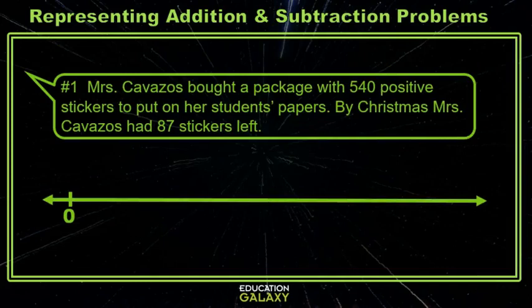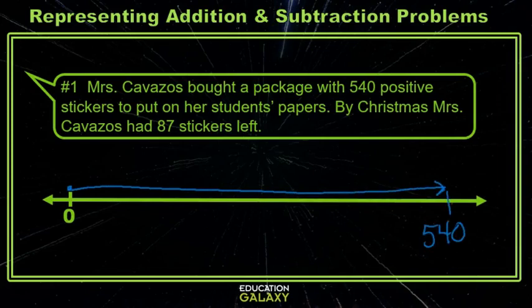We can also use a number line to represent the situation. Mrs. Cavazos bought a package with 540 stickers. She used some stickers — we're not sure how many, so I'll put a question mark — and she has 87 stickers left. It would be the same equation. So we can represent the situation with a strip diagram, an equation, or a number line.